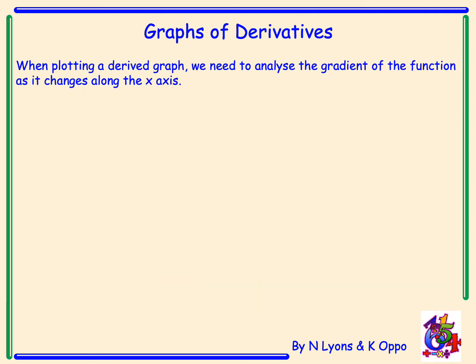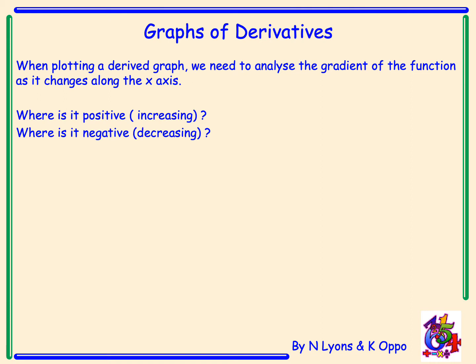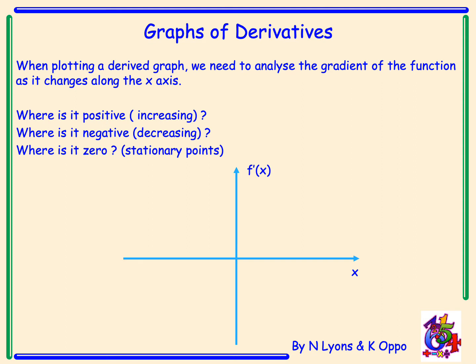So, graphs of derivatives. When plotting a derived graph, we need to analyse the gradient of the function as it changes along the x-axis. We want to know where it is positive — where the function is increasing — where it is negative — where the function is decreasing — and where it is zero, where the stationary points are located. You draw your usual coordinate axes, with the x-axis horizontal, but the y-axis is now labelled f'(x), the derivative. You are plotting the gradient of a graph.